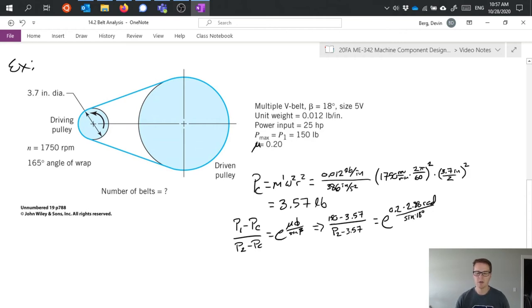Just in case the question comes up in your head in terms of why did I have to convert my 165 degree angle to radians but I didn't convert the 18 degrees for beta, and that is because the 165 degree angle is just being multiplied within that system. It's mu phi over sine beta.